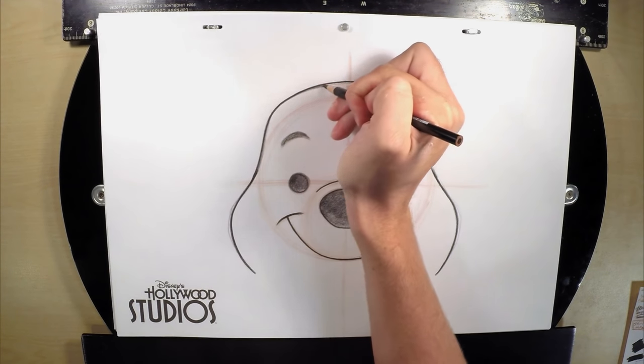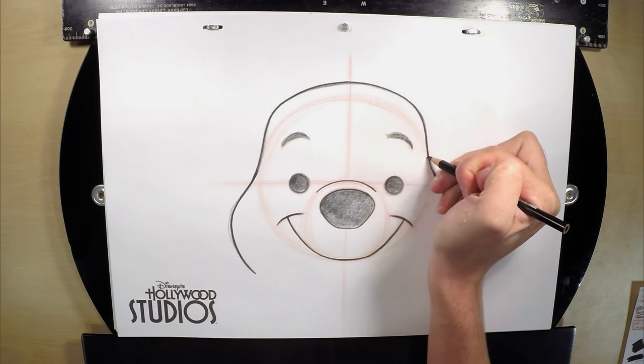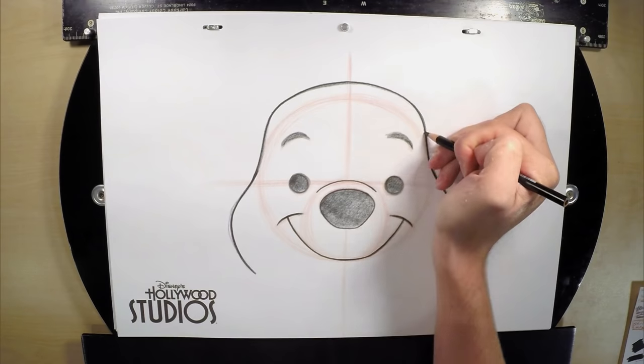Before you darken, make sure that your lines are the way you want them to be. You don't ever want to make anything permanent if you can't fix it.